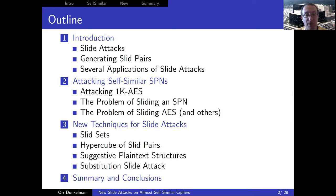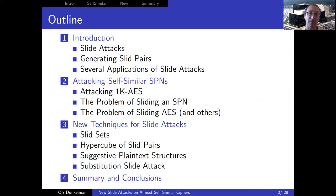Then we're going to discuss two more techniques. The first one is the suggestive plaintext structures, where instead of having to guess which are the slide pairs, we work with a slightly different approach: once you work with a plaintext, you automatically get some of the keying material. And at the end, the substitution slide attack, which involves a lot of playing with arguments to make the attack even faster.